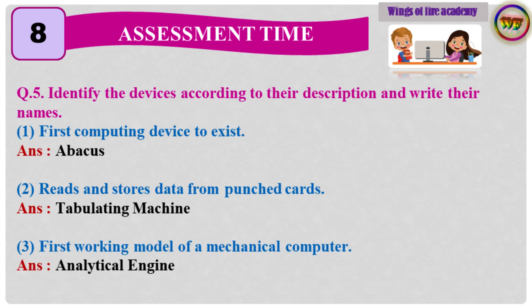Question number 5: Identify the devices according to their description and write their names. 1. First computing device to exist. Answer: Abacus. 2. Reads and stores data from punched cards. Answer: Tabulating machine. 3. First working model of a mechanical computer. Answer: Analytical engine.